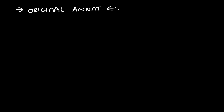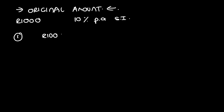Simple interest is basically interest just on the original amount — we don't reinvest anything. Let's explain this with an example: say we have a thousand rand to begin with at 10 percent per annum, simple interest. At the end of year one, the interest is that thousand rand times 10 percent, giving you a hundred rand. So I1 equals a hundred rand.